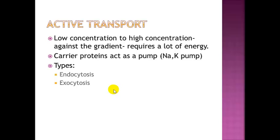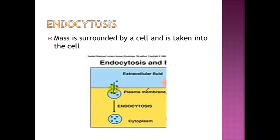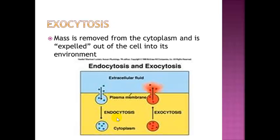These carrier proteins use energy to pump things inside or outside of the cell. There are two different types of active transport: endocytosis, which is when things need to be pumped into the cell, and exocytosis, which is when things need to be pumped out of the cell. There are also protein gates that molecules are pumped through. In endocytosis, the cell membrane opens up, allows material in, and then reattaches and closes up. In exocytosis, the mass is removed from the cytoplasm and expelled out of the cell into the environment.